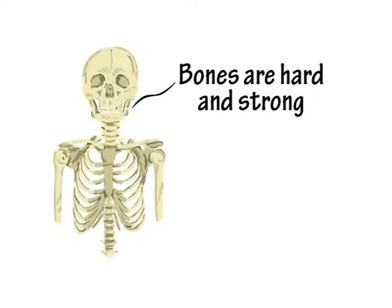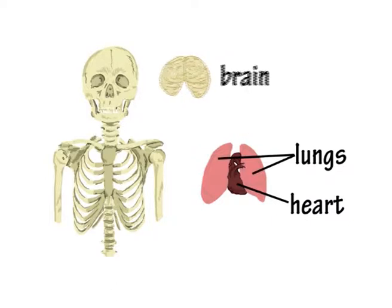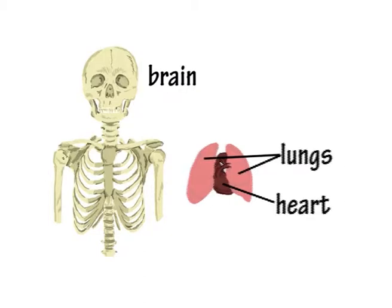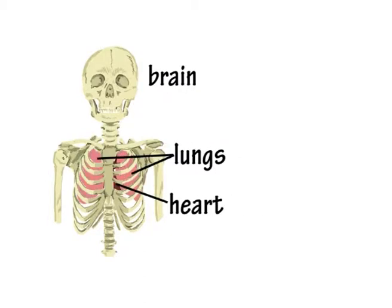Bones are hard and strong, so they are useful for protecting the internal organs of the body. For example, the skull protects the brain and the ribs form a cage, protecting the heart and lungs.